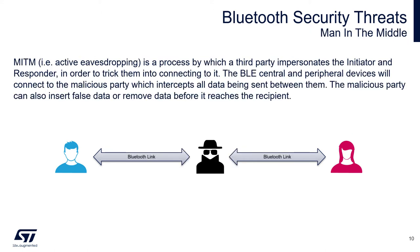Another very common type of attack is man-in-the-middle. There is a malicious third party acting in the middle of the link, impersonating both the initiator and responder. Such an attacker is able to insert data or remove it from the BLE link. Some of the pairing methods provide protection against such attacks and others do not, so it's important to understand the security requirements and the configuration that must be done on the application side.